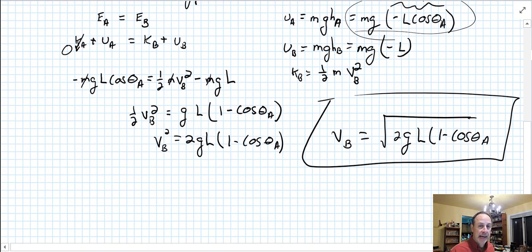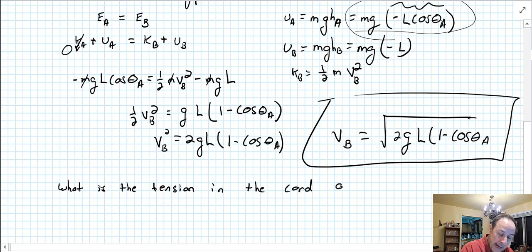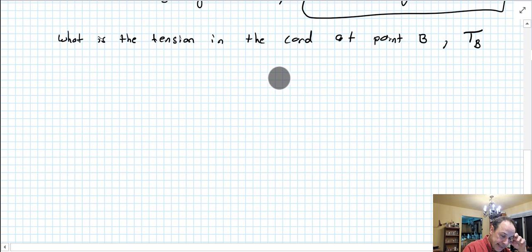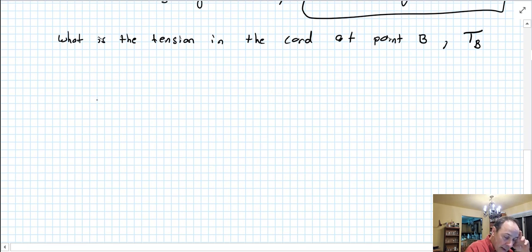Now what if we're asked, what is the tension in the chord at point B? And we would call that T sub B.